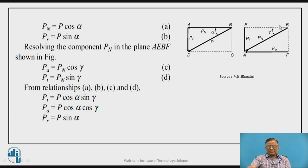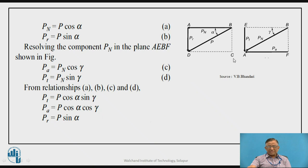Substituting PN = P cos α into the expressions, the components due to normal reaction are: PT = P cos α sin γ, PA = P cos α cos γ, and PR = P sin α. These represent the three normal reaction force components acting on the worm.